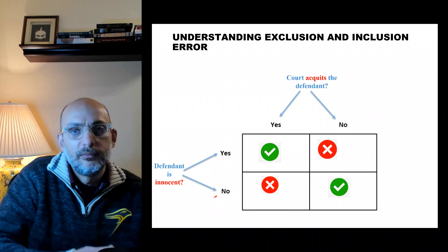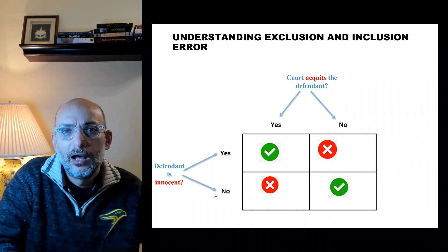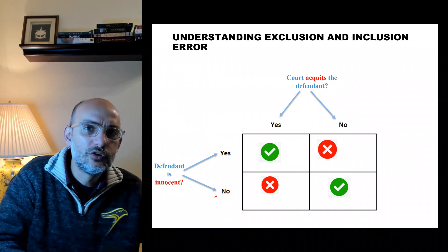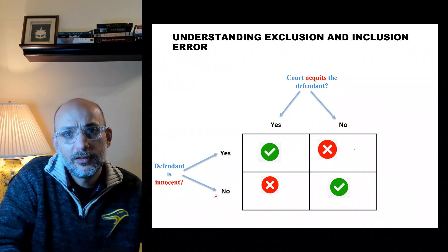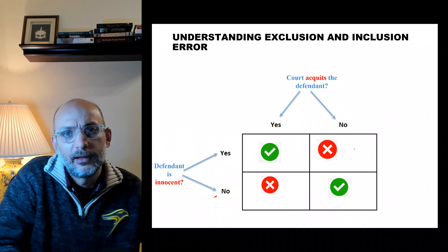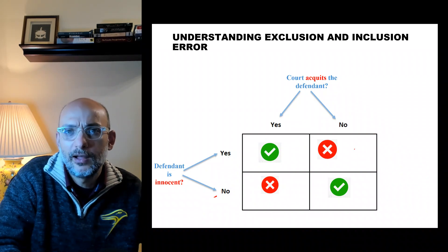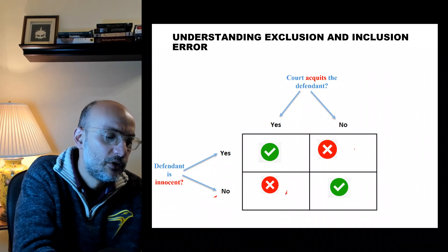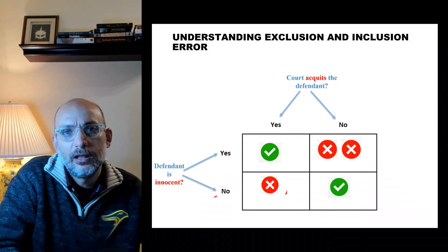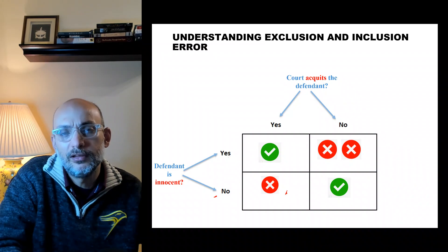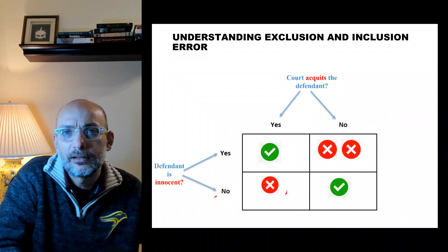In modern understanding, the worst case is sending an innocent individual to prison. It is much worse than acquitting an individual who did indeed commit a crime — acquitting a criminal. A judge would prefer to make the second error over the first. We feel horribly bad when we hear of someone who spent 20 or 30 years in prison for a crime they never committed.